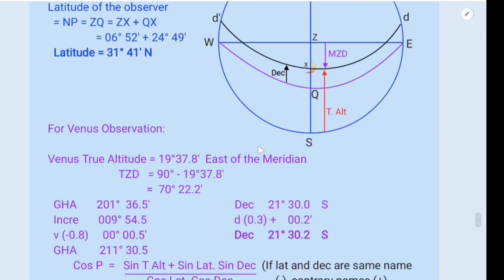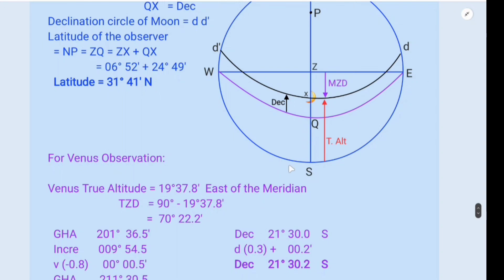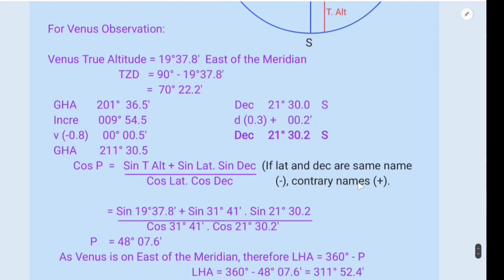Here declination is south, latitude is north. So they are of contrary names, different names. So we add. So the plus sign is put here.